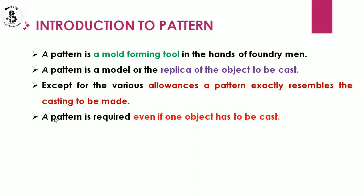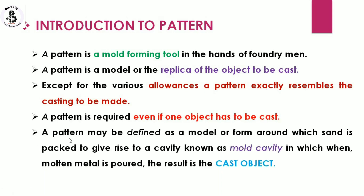A pattern is required even if only one object has to be cast. A pattern may be defined as a model or form around which sand is packed to give rise to a cavity — the mold cavity — into which molten metal is poured, and after solidification, the result is a cast product.